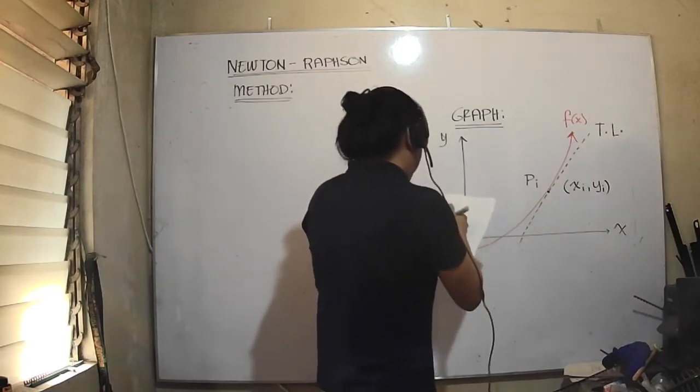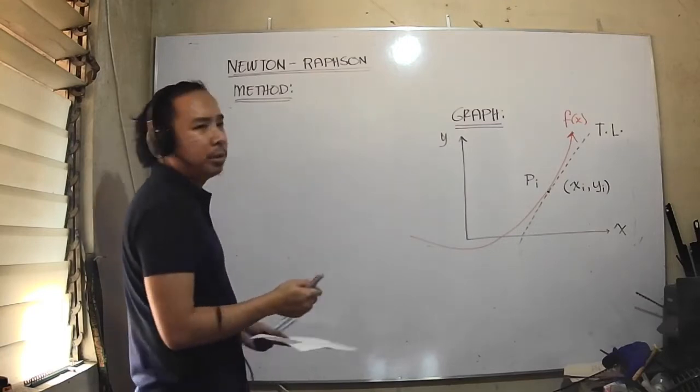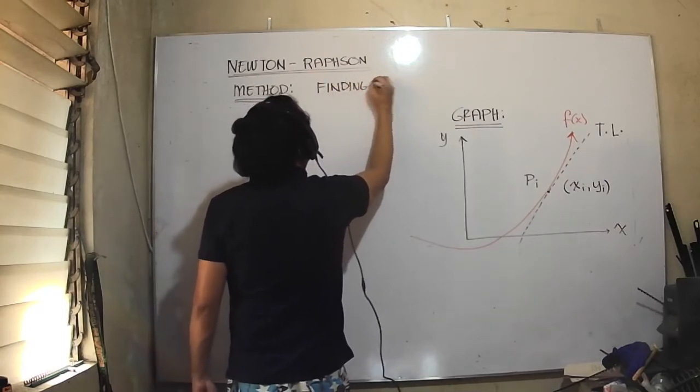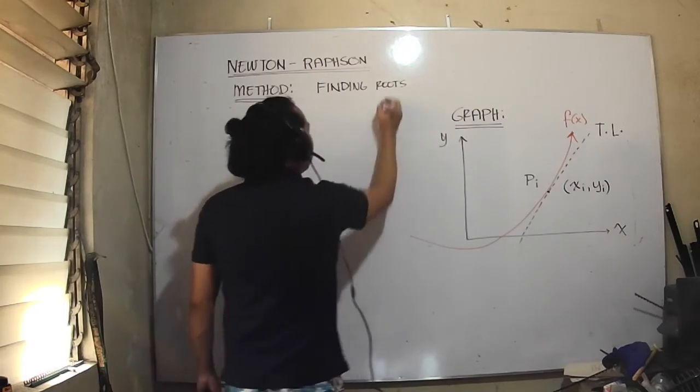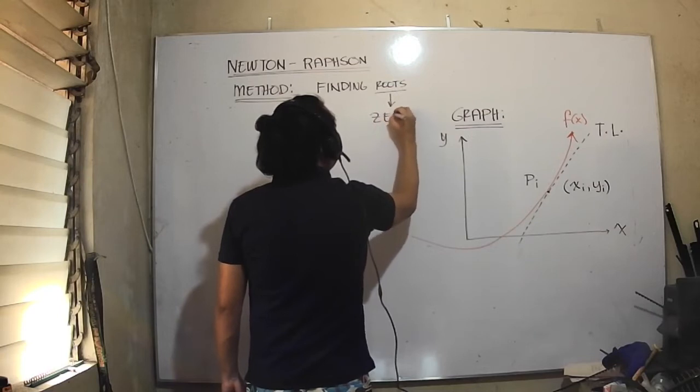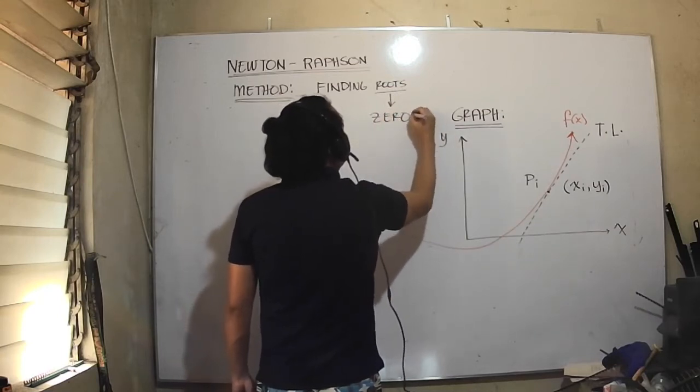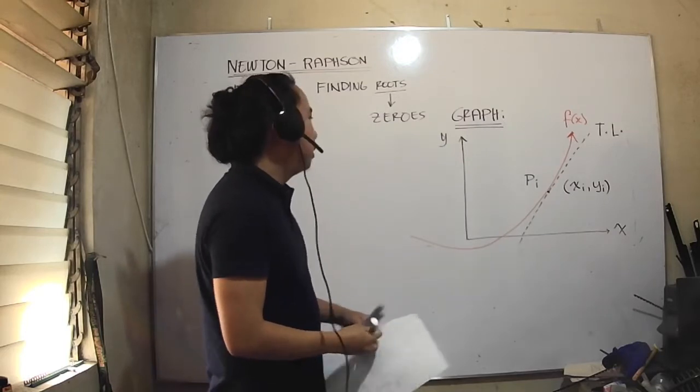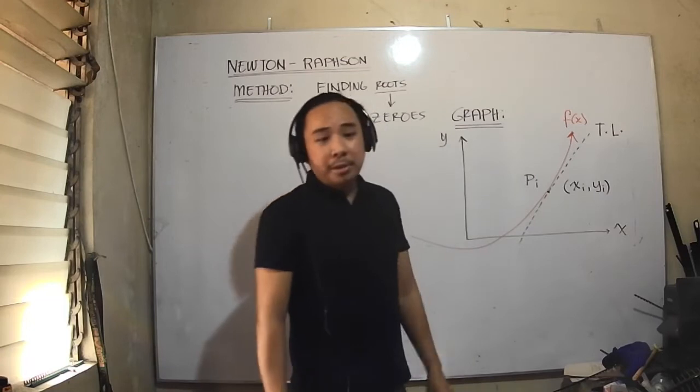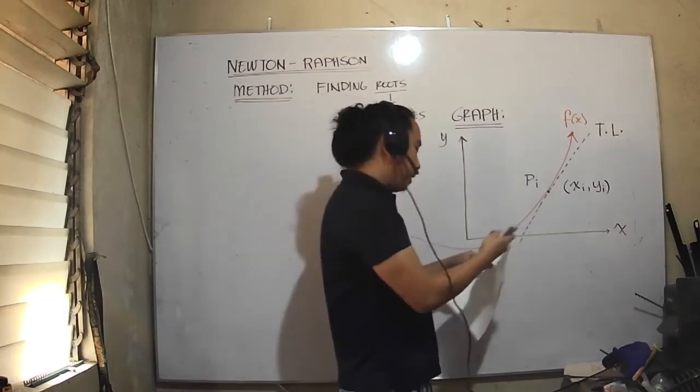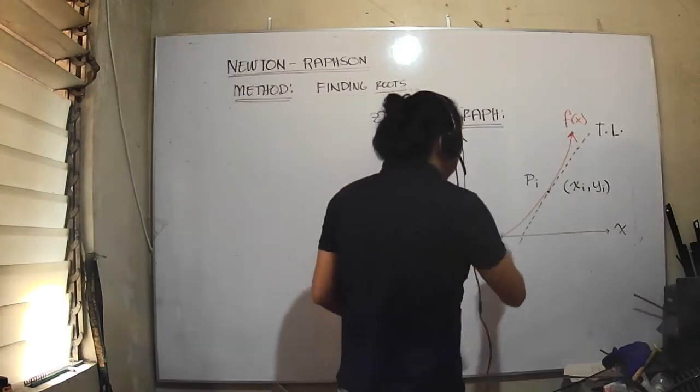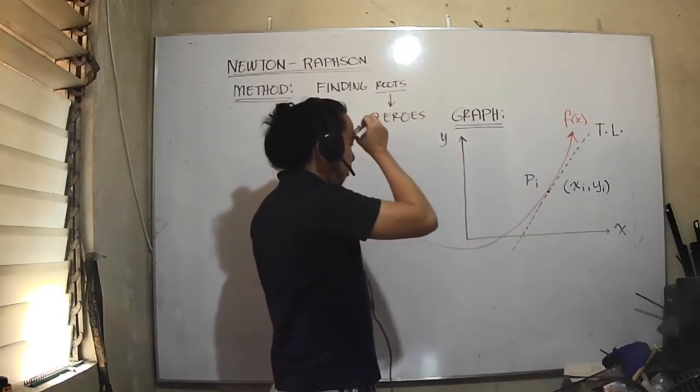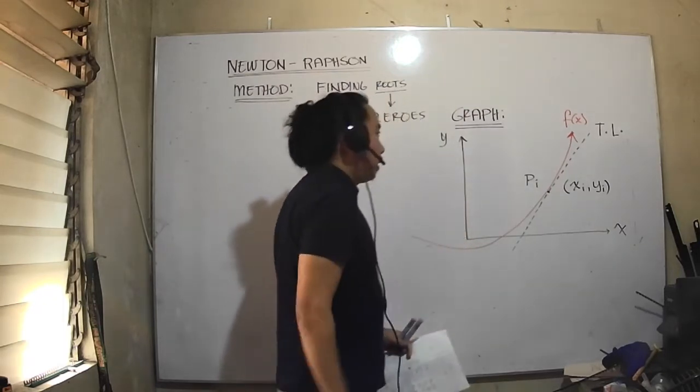When you say Newton-Raphson method, we're dealing with a method of finding roots. When you say roots, that's zeros. Zeros of the equation is a point or value of x which, when input into the function, gives zero.